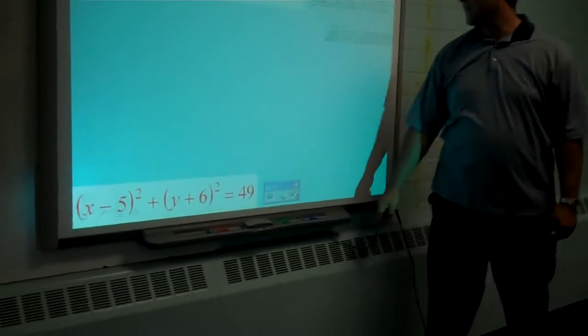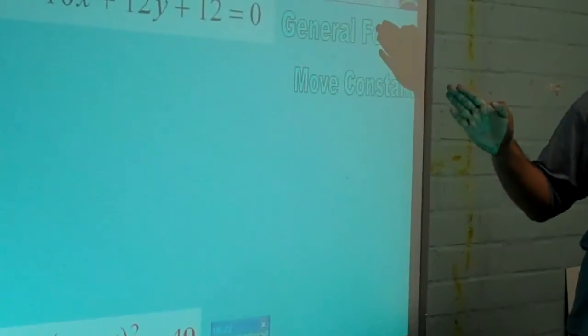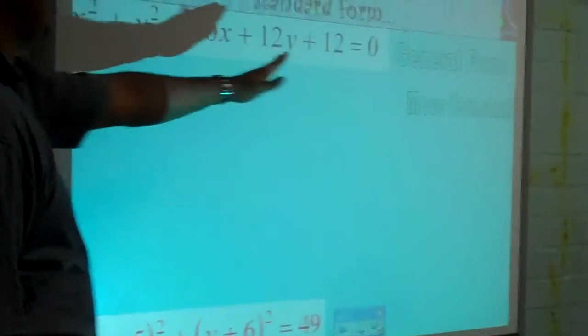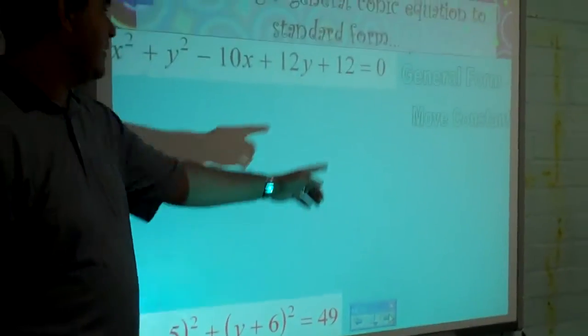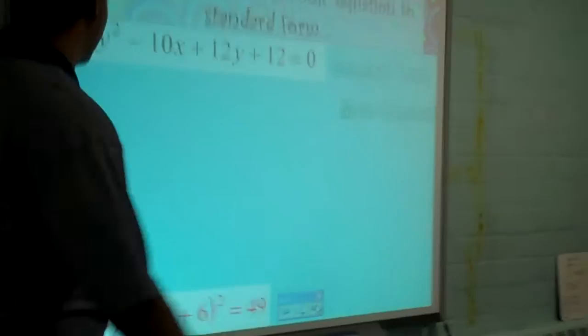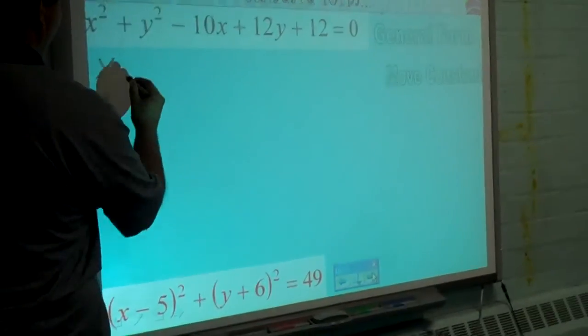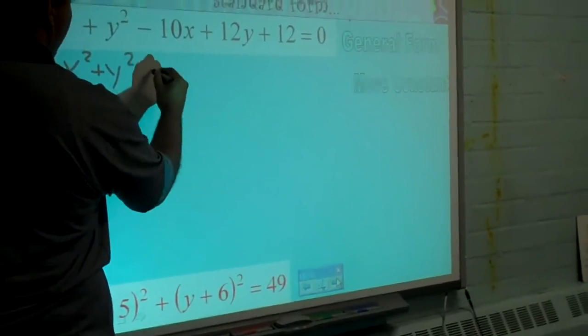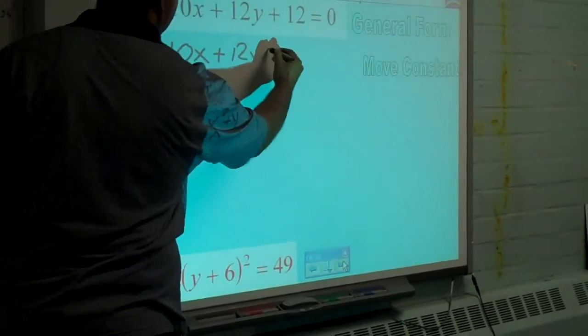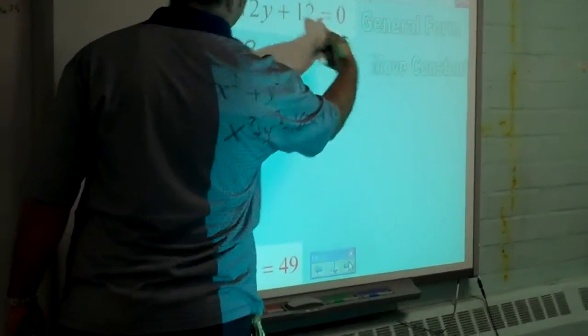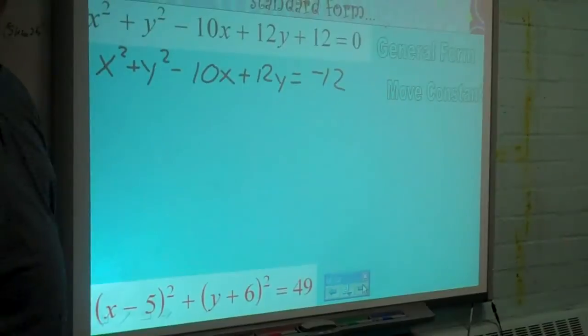First step. We're going to move the constant over. Which part of this equation is the constant? The 12. Move it over to the other side. That's going to give us, X squared plus y squared minus 10x plus 12y equals negative 12. Just subtracted the 12, moved it to the other side.